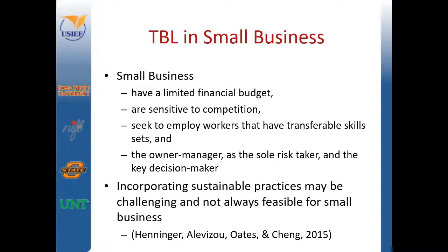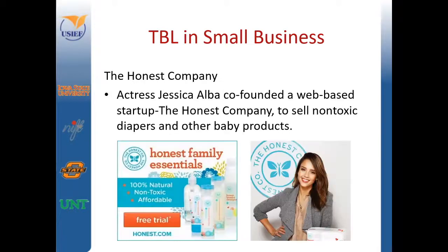Triple bottom line varies from large to small businesses. Small businesses have a limited financial budget, are sensitive to competition, seek employees with transferable skill sets, and the owner-manager is the sole risk taker and key decision maker in most instances. Therefore, incorporating sustainable practices may seem challenging and not always feasible for small businesses. However, many of these risks are similar to those of large businesses. Some small businesses are started with specific triple bottom line environmental or ethical well-being initiatives in mind.